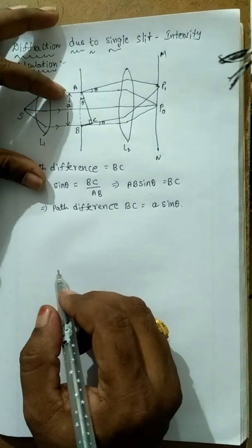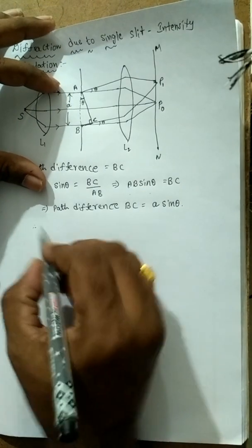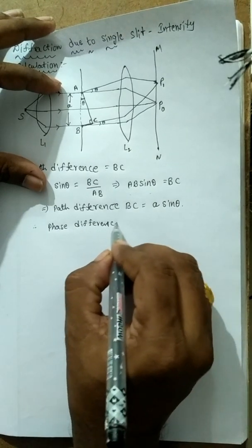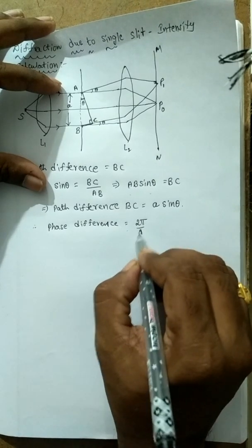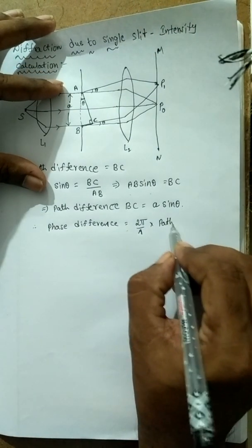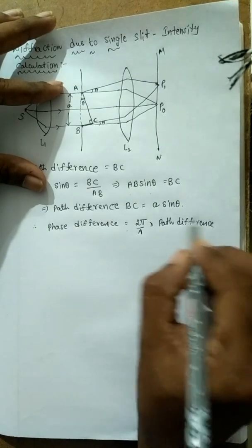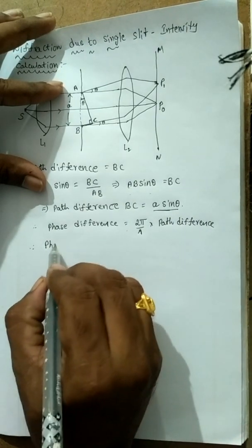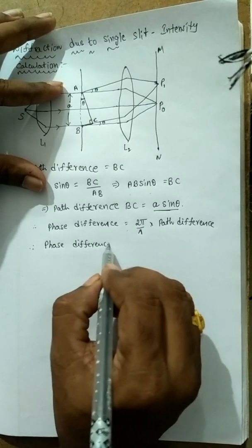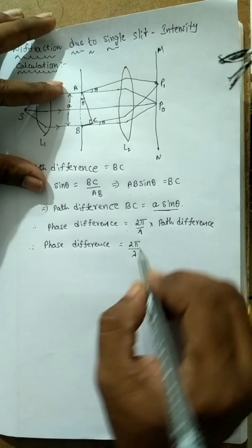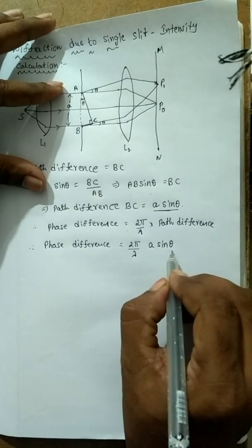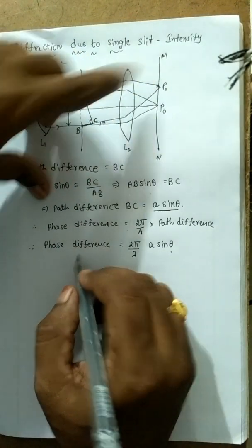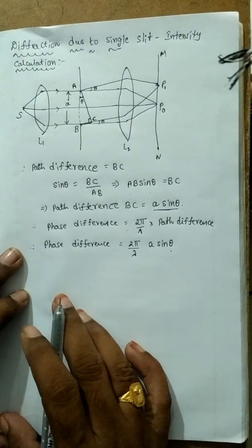There is a relation between path difference and phase difference: phase difference = (2π/λ) × path difference. The path difference here is A sin θ, so phase difference = (2π/λ) × A sin θ. This is the phase difference between the two rays participating in the diffraction.